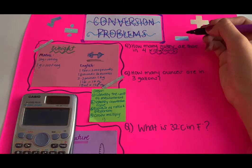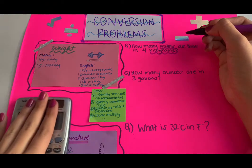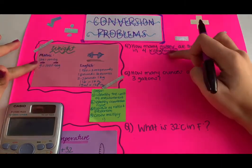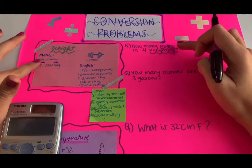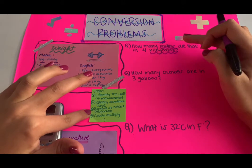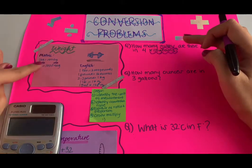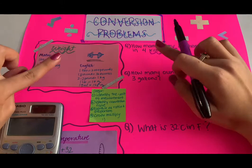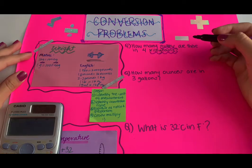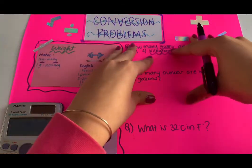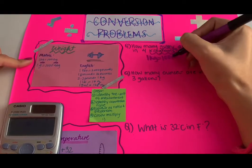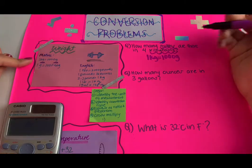Step two: identify the conversion rate. You go to your memorized conversion rates, and we see that kilograms and grams are the two measurements we need. Step three: express as a ratio and proportion. We put grams on one side and kilograms on the other, so we say one kilogram is equal to 1000 grams.